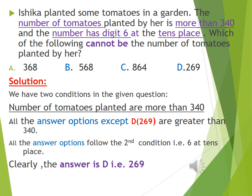Number of tomatoes planted are more than 340 and all the answer options except D are greater than 340. And all the answer options follow the second condition, that is 6 at 10's place. Clearly the answer is D, 269.